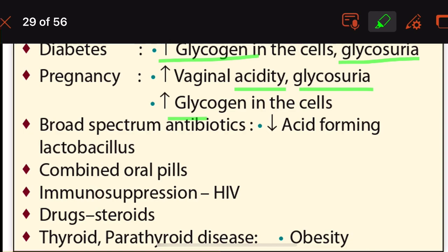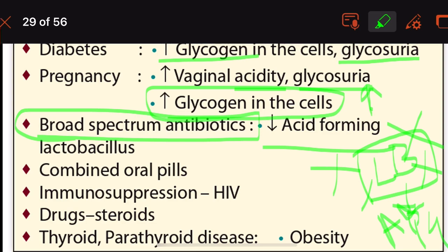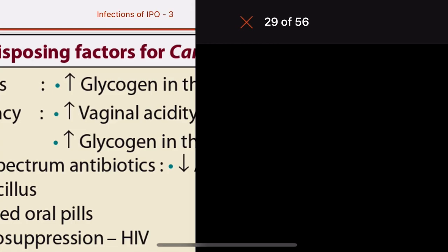Broad-spectrum antibiotics decrease the acid-forming Lactobacillus in the vagina, reducing the acidic pH. Combined oral contraceptive pills, immunosuppression in HIV, steroids, thyroid and parathyroid diseases, and obesity are also associated with an increased incidence of moniliasis.